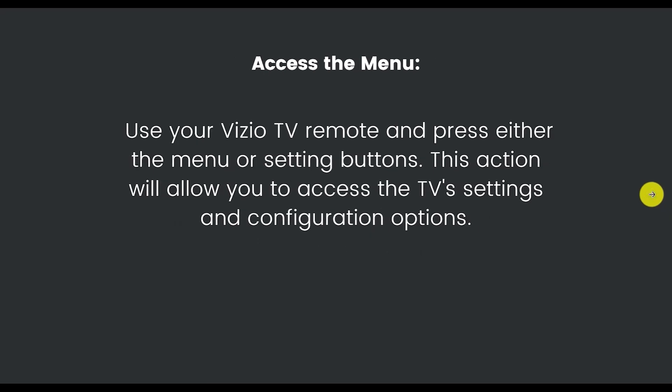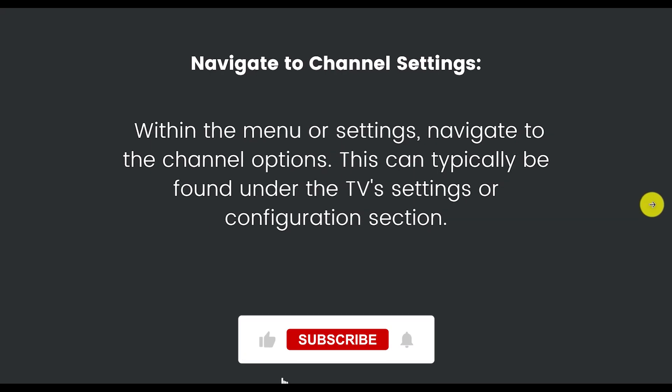After that, proceed to access the menu. Use your Vizio TV remote and press either the Menu or the Settings button on your remote. This action will allow you to access the TV settings and configuration options.